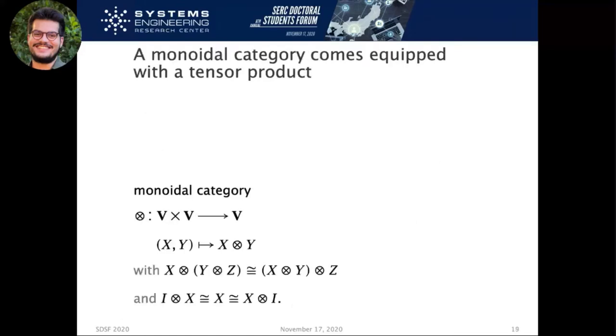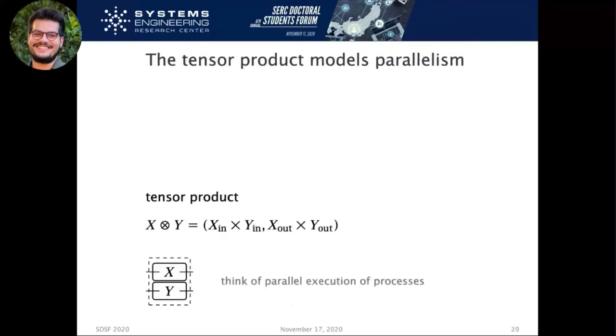Then we also might want to do things in parallel, so we have a thing called a monoidal category, which in set, it just means a Cartesian product. And this can be thought of as a parallel execution of processes. If I want to do something at the same time, I also have the tensor product.